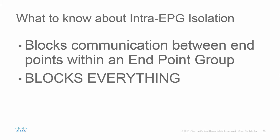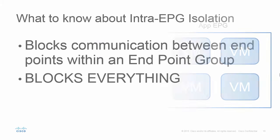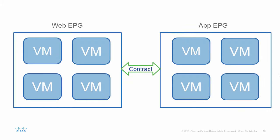So what do I mean by that? Let's say we have a web endpoint group and an app endpoint group, and we have four VMs in each, and a contract between them.